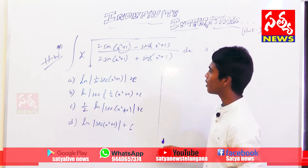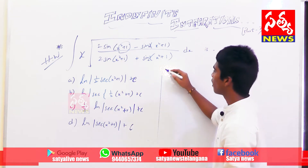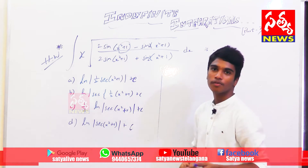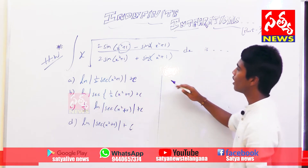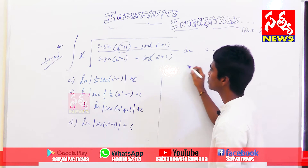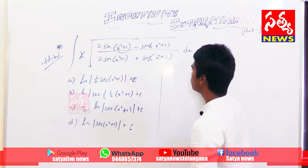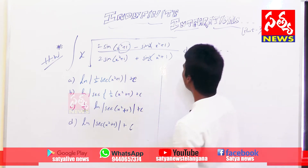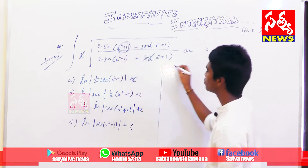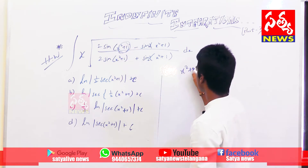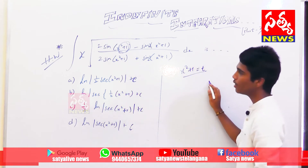This was the problem given in part 2. I thought you have done it, and I am going to solve it. By seeing the question, you can say that x squared plus 1 should be taken as t. Let us assume that x squared plus 1 equals to t.